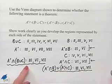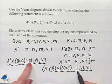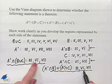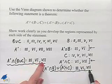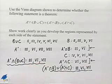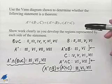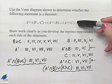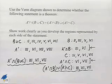We can see that we have regions 3, 6, and 7 in both the left-hand side and the right-hand side, and for that reason we can show that this statement is a theorem.